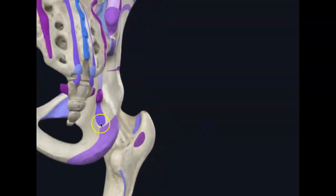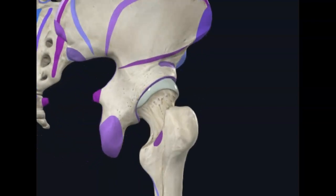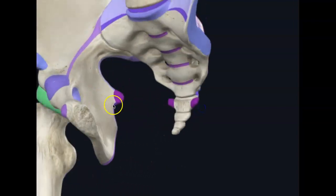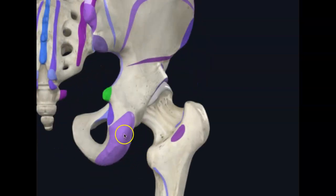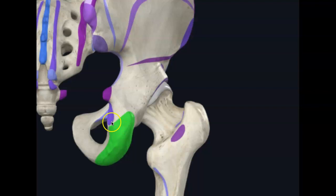So see where this purple is? This purple, not that purple or that purple. That is the lesser sciatic notch right there. It's formed by this little part right here, the spine, and it goes all the way down to here almost, the tuberosity.